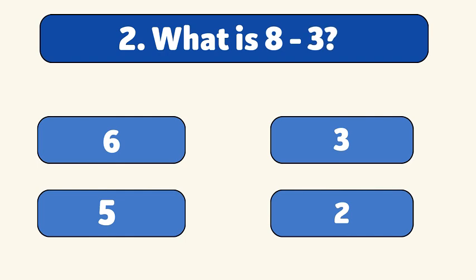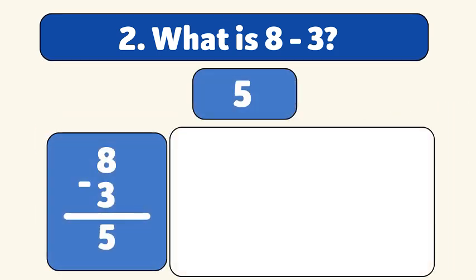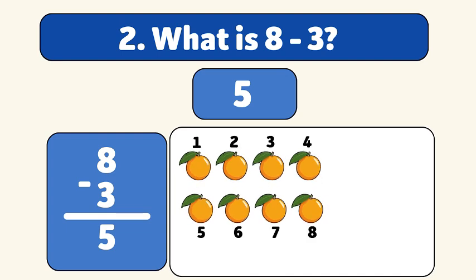What is 8 minus 3? The answer is 5! We start with 8 oranges and take away 3. Let's count! 1, 2, 3. We have 5 oranges now.